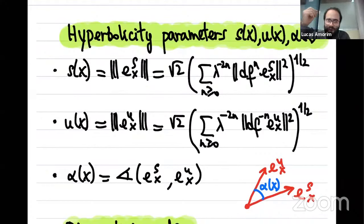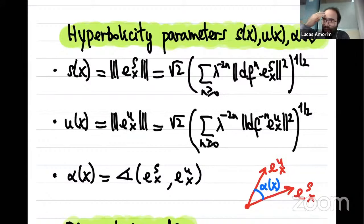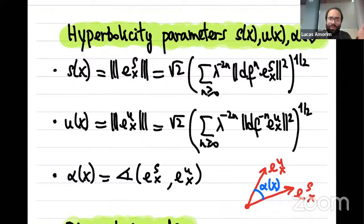There is a question: if the original norm was already adapted, could S(x) and U(x) be equal to one? The answer is related to the fact that this formula depends on the lambda we fixed — to every lambda you can define a new metric, so the answer depends on which lambda you choose.